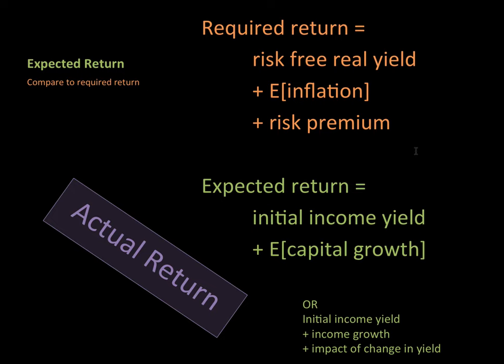Expected return comes down to the various asset classes. Assets can yield return in two ways: through income and through capital growth. With a share, it's the dividends and the price increasing. With property, it's the rent and the value of the building going up. Expected return has that continuous income yield and that expected capital growth. And remember, there's something completely different — the actual return realized at the end of the day — which could differ from expected return, but we're hoping it will be close, depending on how risky the asset was.